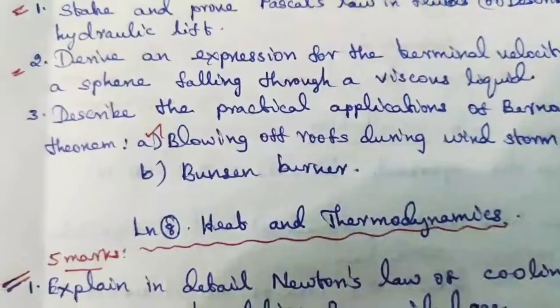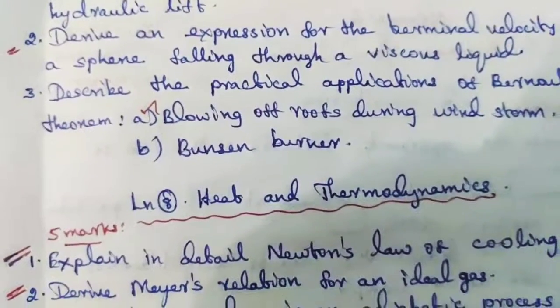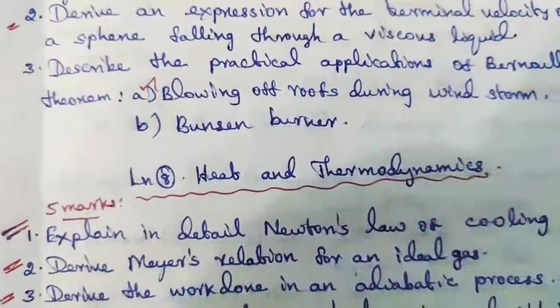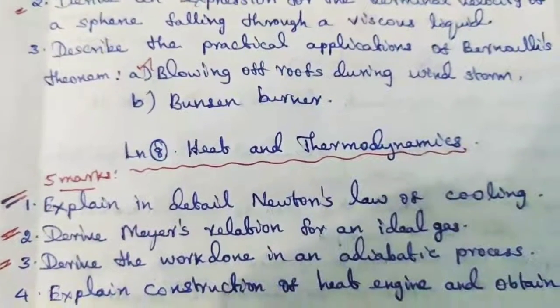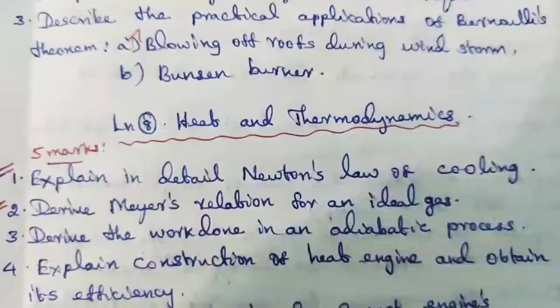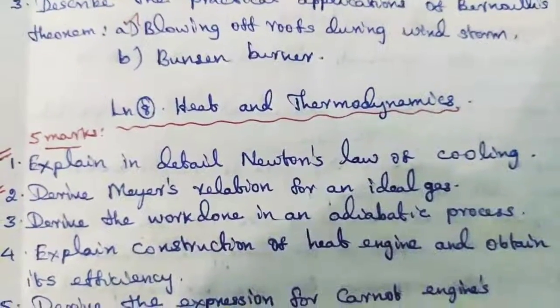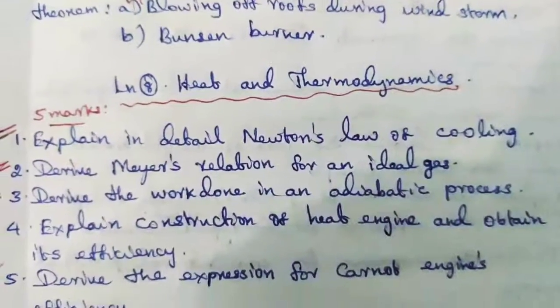Lesson 8, heat and thermodynamics, 5 marks. Question 1: Explain in detail Newton's law of cooling. Derive Mayer's relation for an ideal gas. Derive the work done in an adiabatic process. Explain construction of heat engine and obtain its efficiency.